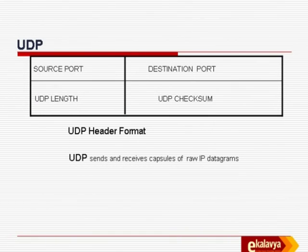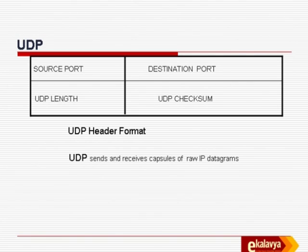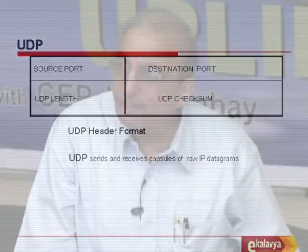Note that we have source port and destination port. Now take UDP — UDP has a source port, a destination port, UDP length, and UDP checksum. See how simple the UDP packet is. It defines where the source is and where the destination is — that is the UDP header format. It sends and receives capsules of raw IP datagrams; the individual datagrams move as IP packets.